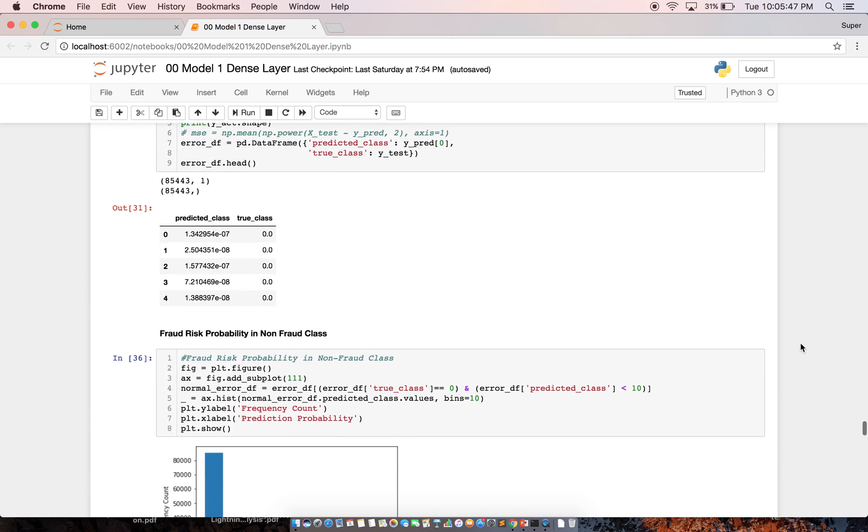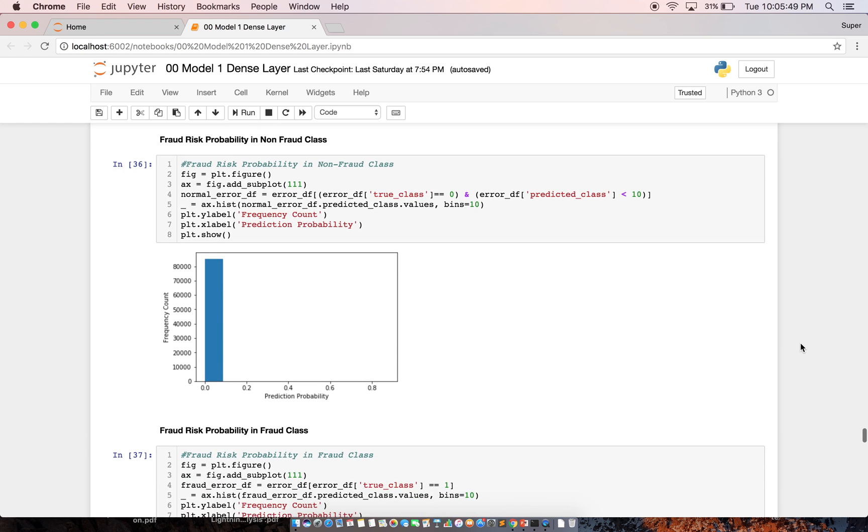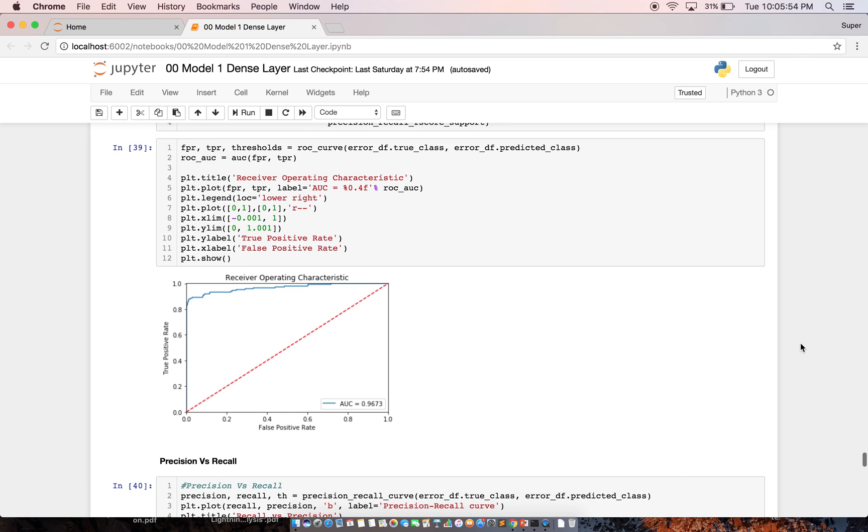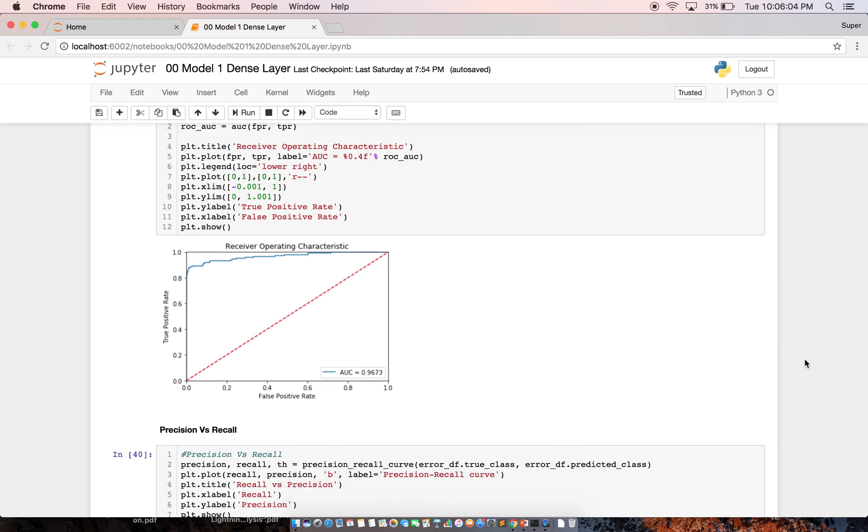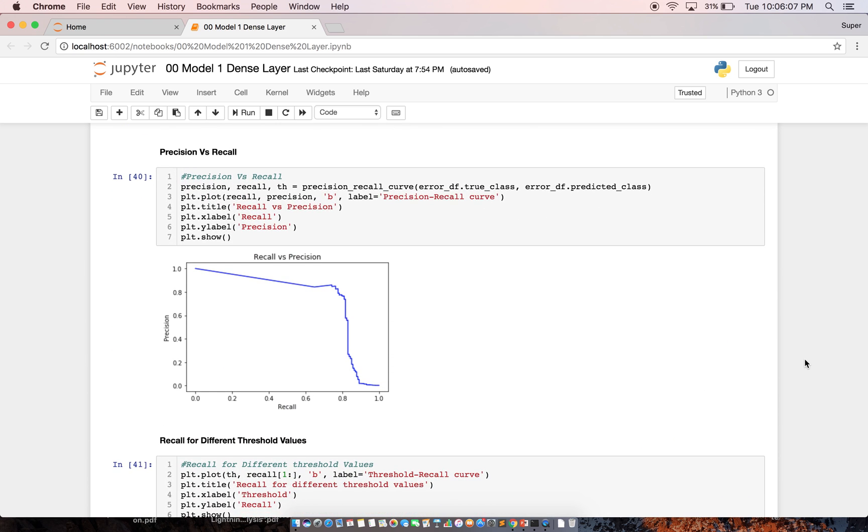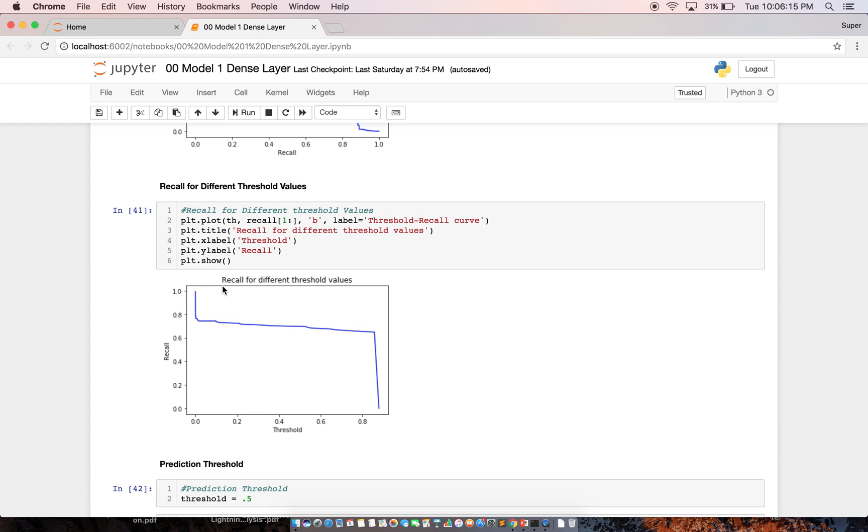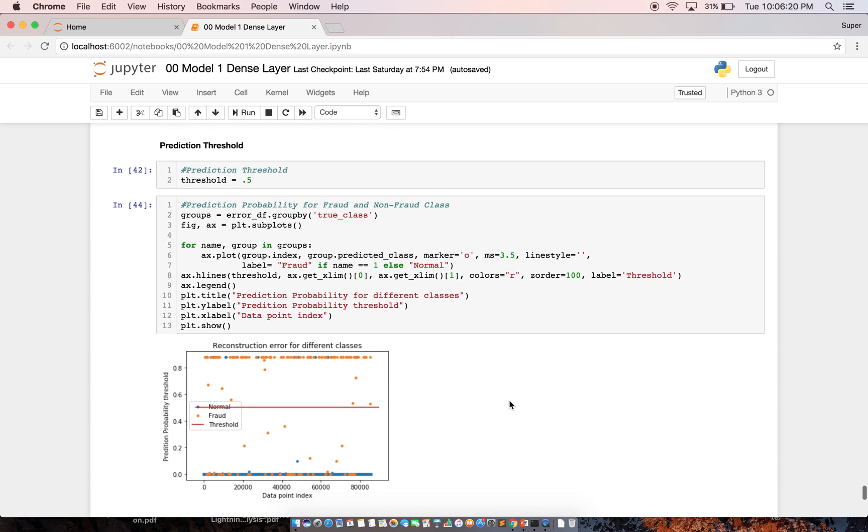And I actually observed different types of performance metrics. I looked at the ROC value. The AUC value of this ROC curve is coming around 0.96, which indicates the model is really performing well on predicting the fraud. And I looked at the recall versus precision. And I observed the change of recall with respect to different threshold values.